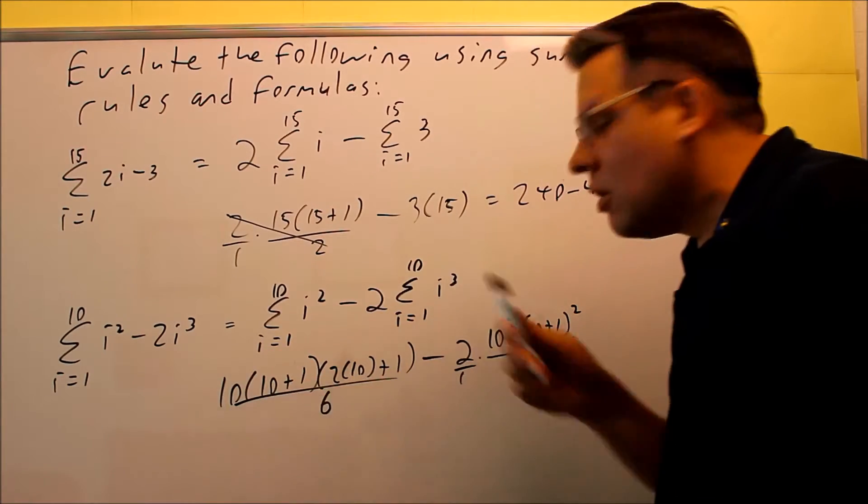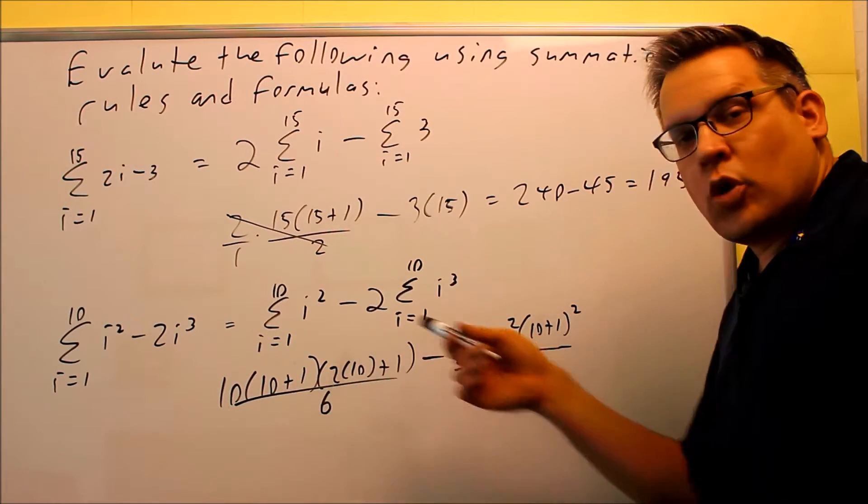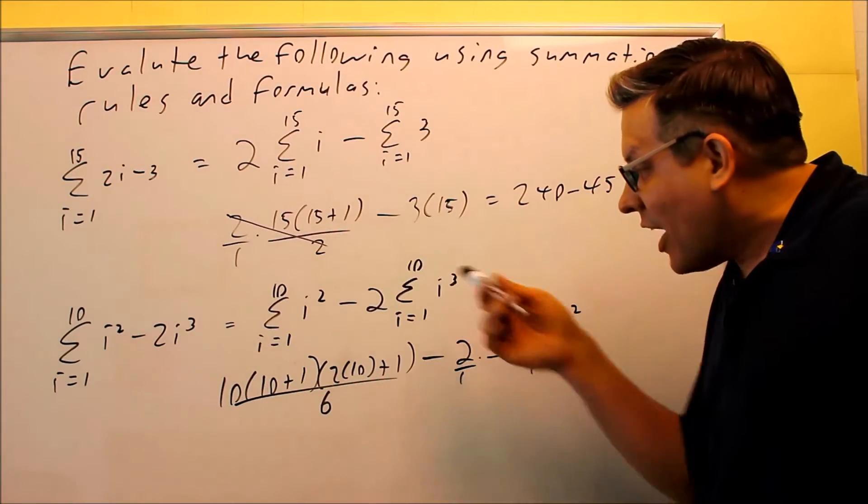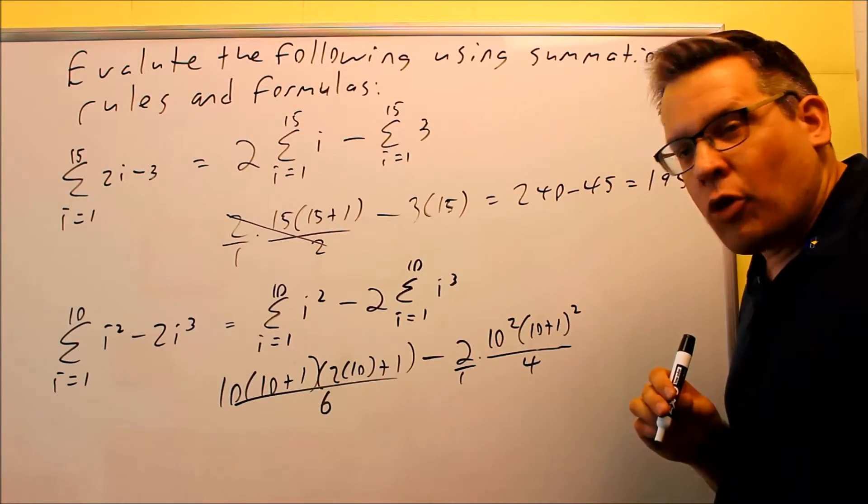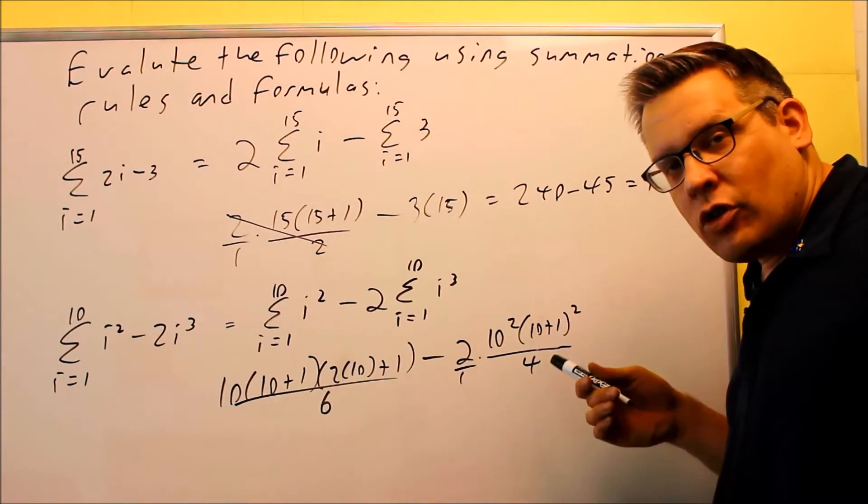So again, this is the one for the i squared, n, n plus 1, 2n plus 1 over 6, that's the main one I'm using. The one over here, if I have i cubed, I'm using that specific formula. That's n squared times n plus 1 squared, all that over 4. So 6 and 4, that's all part of the formula.